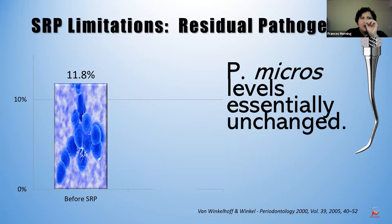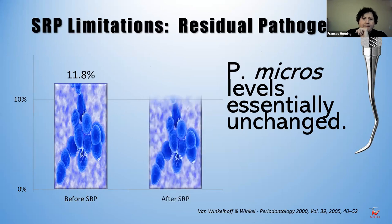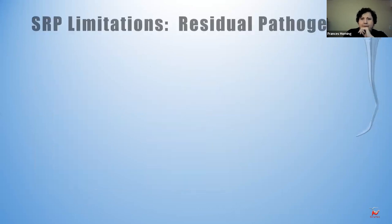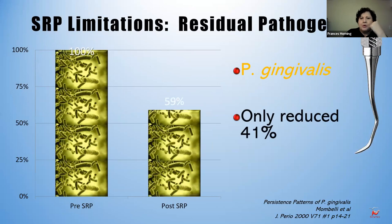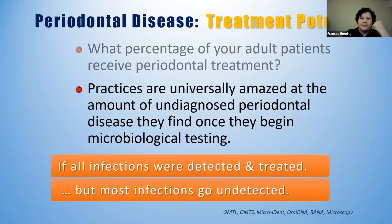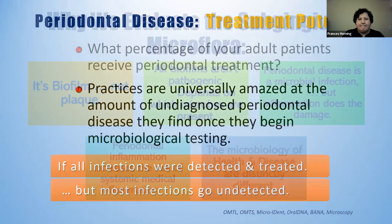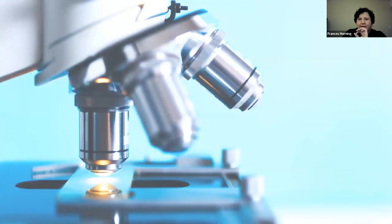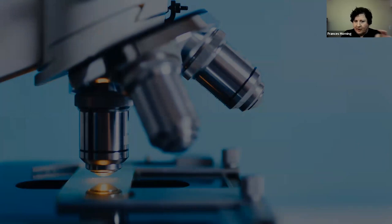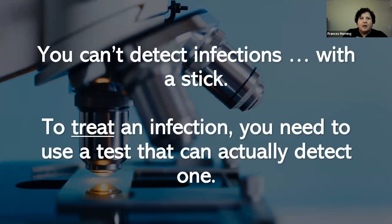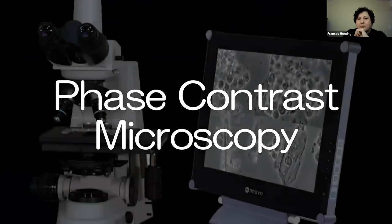Ozone is a crucial part of your armamentarium. You can't detect infections with a stick — you can only treat it if you know what's going on in there, and that's why you're using the phase contrast microscope. If we detected all infections, how many more patients would you be able to treat? It's not the calculus — it's the biofilm.